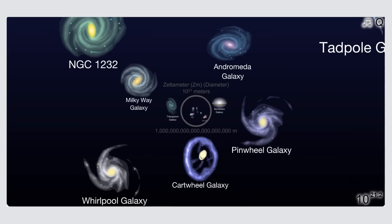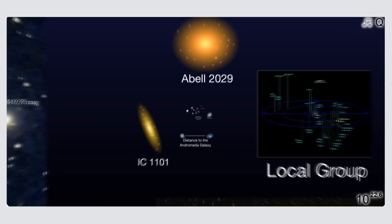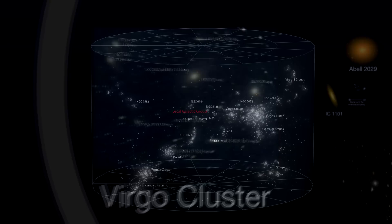When we go a thousand times larger than this, we begin to see the superstructure of the universe, which is made up of super clusters. We live in such a structure, called the Virgo supercluster. It also contains Andromeda and about 100 other galaxies.